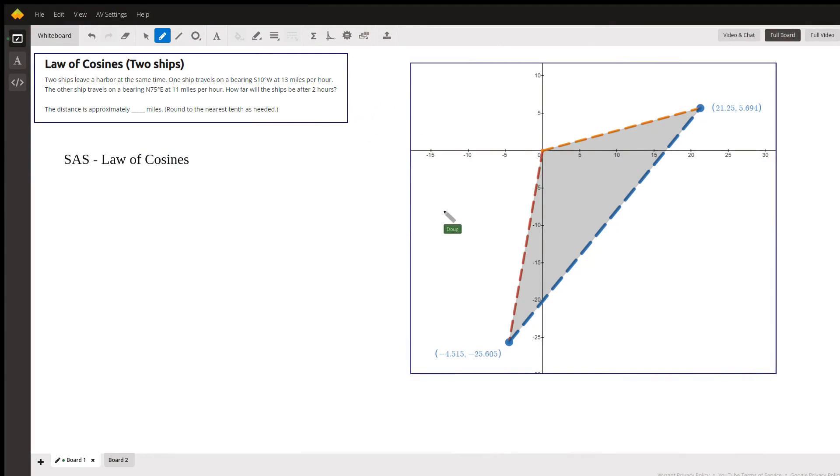This video will focus on how to set up the diagram that illustrates the situation. We've got a ship that's traveling on a bearing of south 10 degrees west. If the ship starts at the origin and heads south, that would be this direction, but then 10 degrees to the west makes this angle right here 10 degrees.